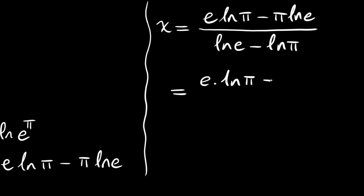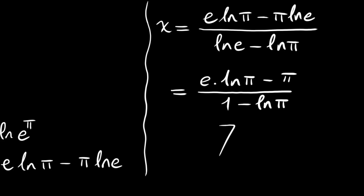This simplifies to: e times ln(pi) minus pi times 1, which is pi, divided by ln(e) is also 1 minus ln(pi). This is the final result. Thank you for watching and see you in the next videos.